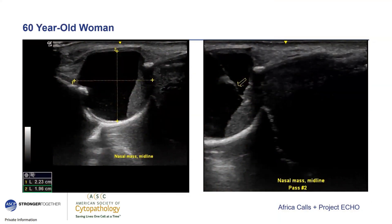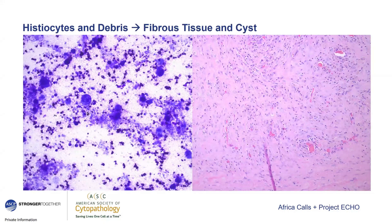Here's one last case to illustrate some limitations of FNA: a 60-year-old female with a 2.2-centimeter rounded cystic mass right at the nasal midline—mostly anechoic but with some debris visible. The FNA was signed out descriptively as histiocytes and debris without any epithelial component to evaluate. On resection, the case was signed out as fibrous tissue and bone with a central cyst with bland epithelial lining, with the mention that in the appropriate location the cyst could be related to Rathke's cleft cyst. While the FNA diagnosis wasn't incorrect, it still necessitated the surgical procedure for full evaluation and removal.